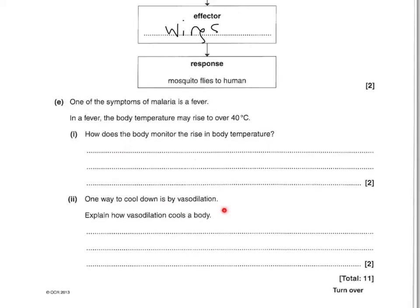One way to cool down is by vasodilation. Explain how vasodilation cools the body. Two out of any of these three points: you can say the blood flows close to the surface of the skin — that's one mark, you don't have to say skin, just say blood flows close to the surface. Second mark, you could say there's increased heat loss, or just there's heat loss. And with the third mark, you can say how there's heat loss — by radiation, conduction, or convection. Any of those three heat transfers you can use for a mark. So any two of those three points.